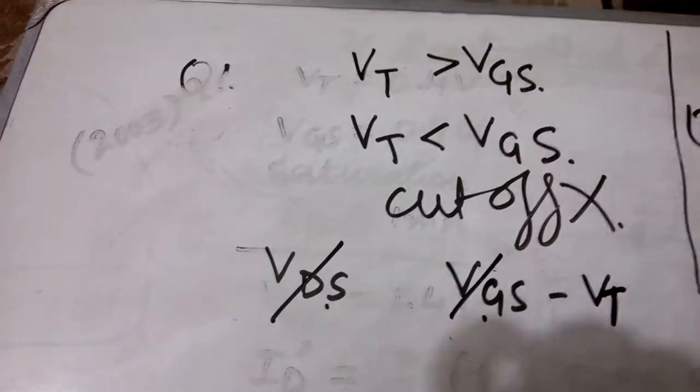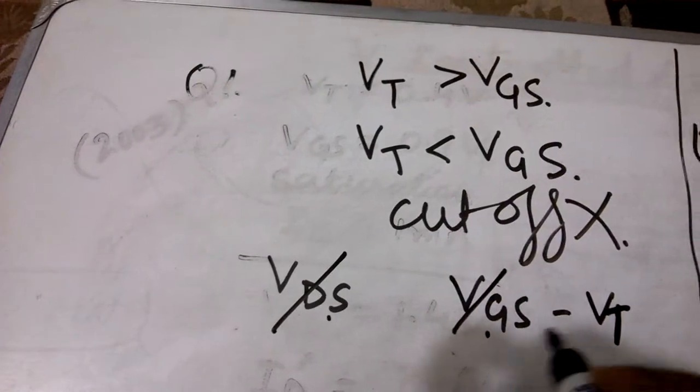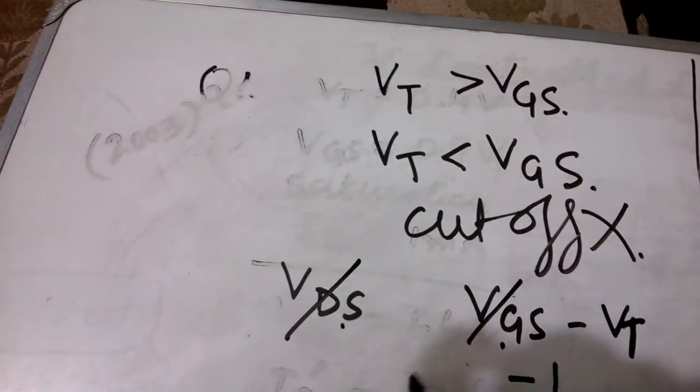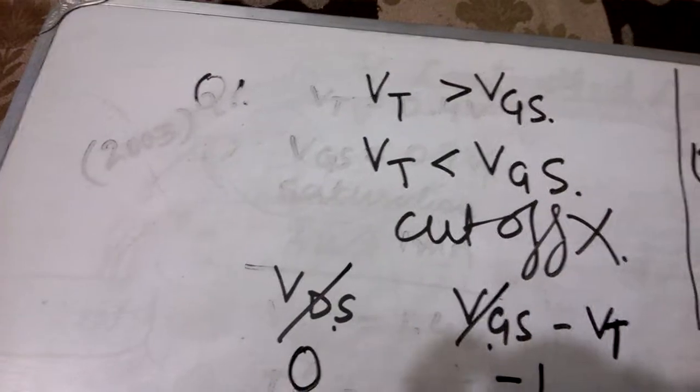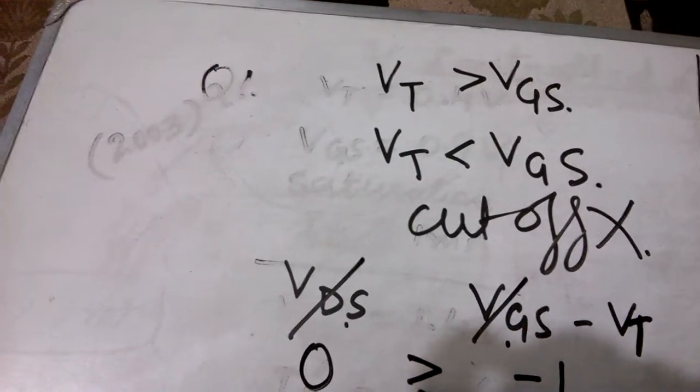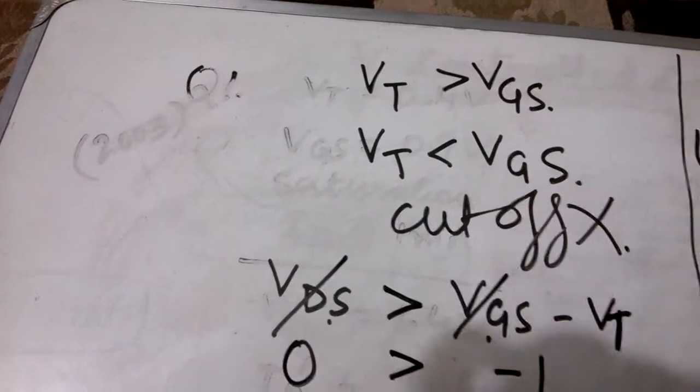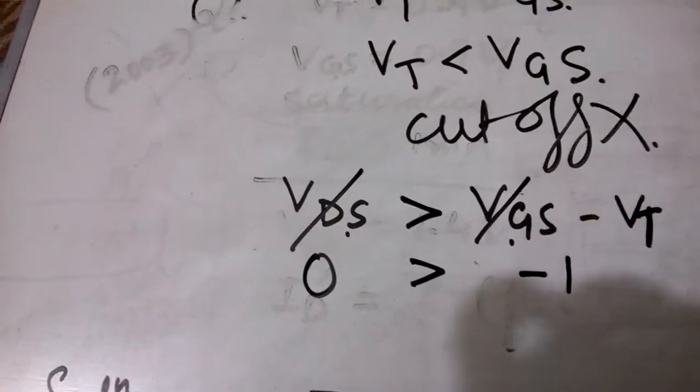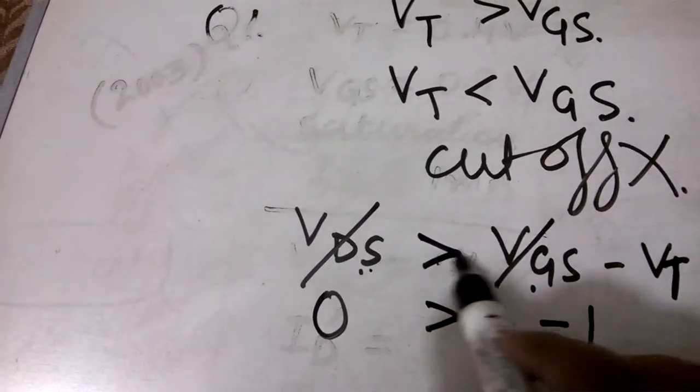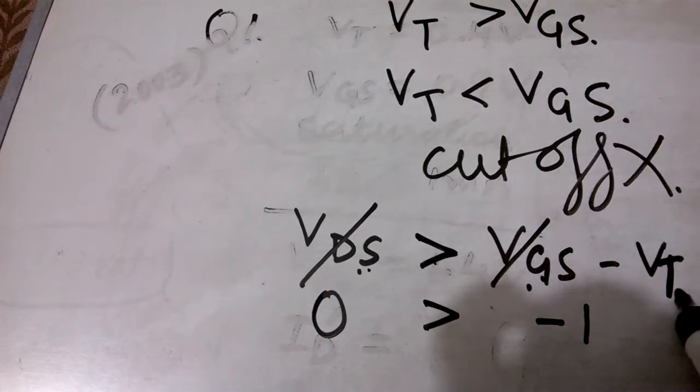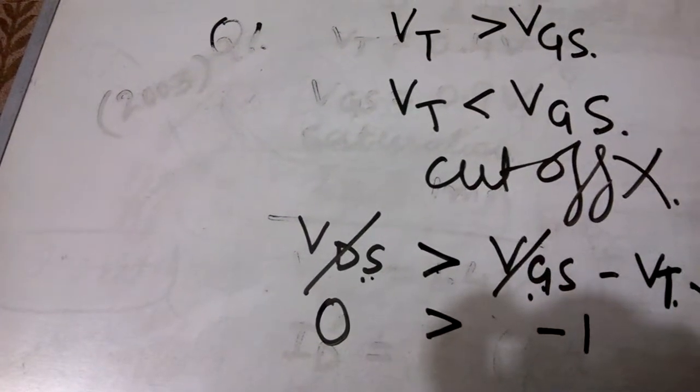Since it is given VDS and VGS are equal, if we are comparing we can cancel these two and the value of VT is 1. If I put minus 1, this is 0 here. Minus 1 is always less than 0, so this symbol can be represented by less than.